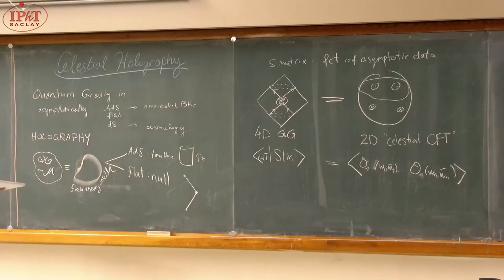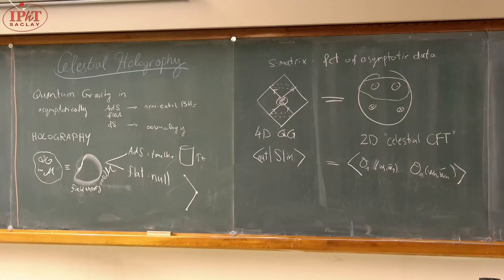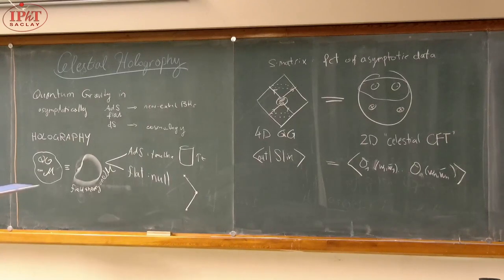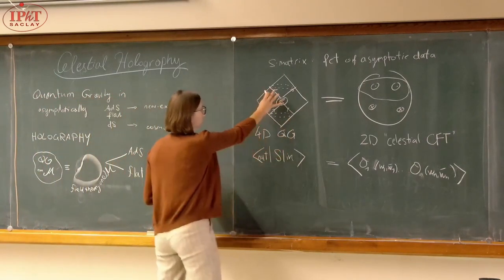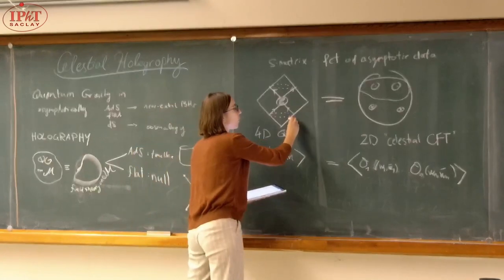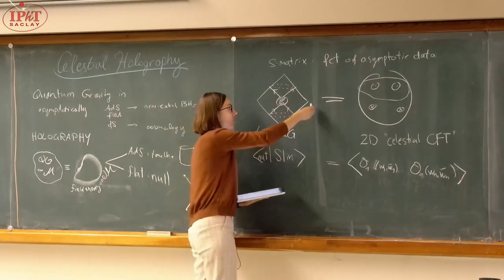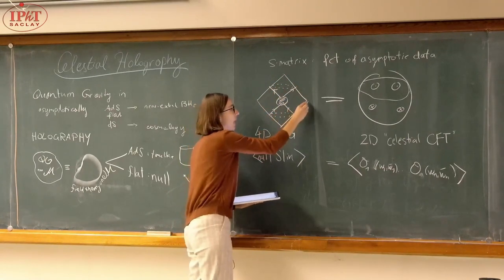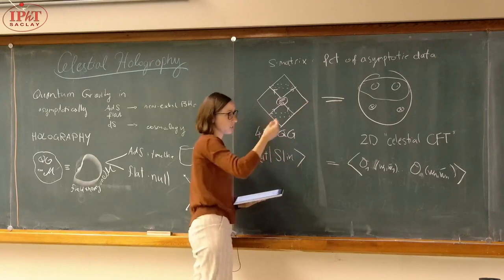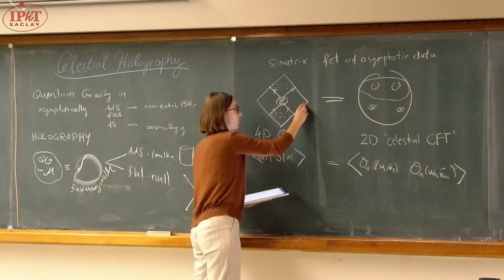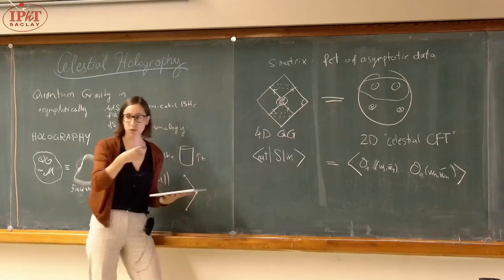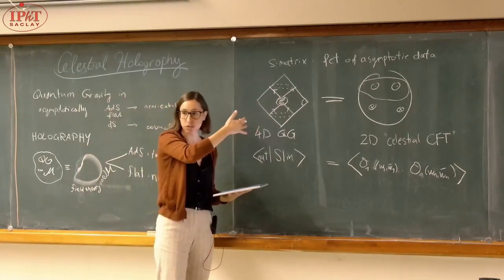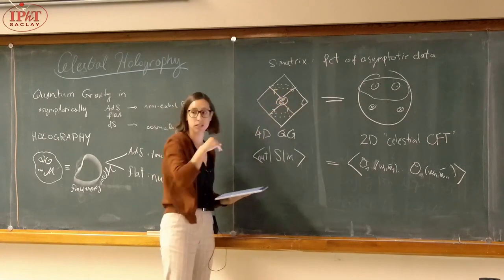When saying that initial and final scattering data live on the same sphere, what is meant will become clear shortly. It has to do with understanding that to have a well-defined scattering problem, you need to know how fields defined at the past boundary and fields defined on the future boundary are related as you go near spatial infinity, and that will tell us there is one sphere, not many.